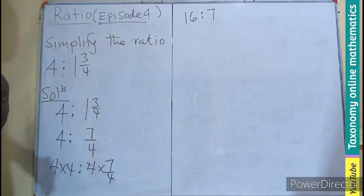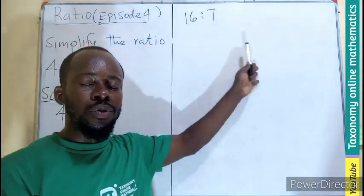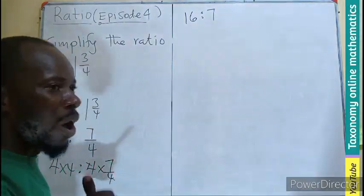This will cancel, then I'll be left with 16 is to 7. This is the simplest ratio you are looking for.